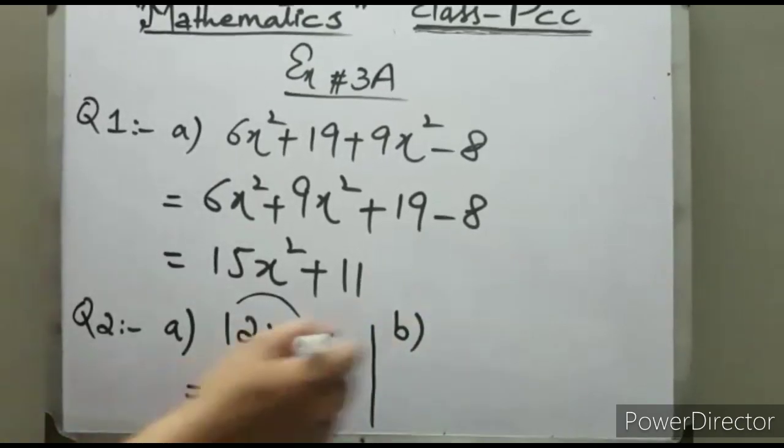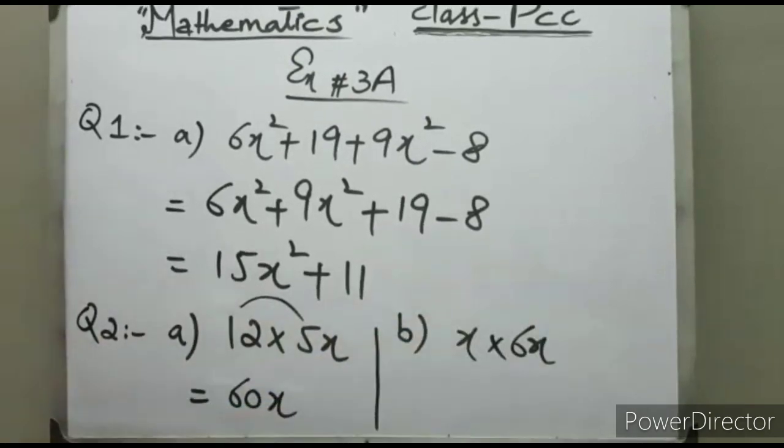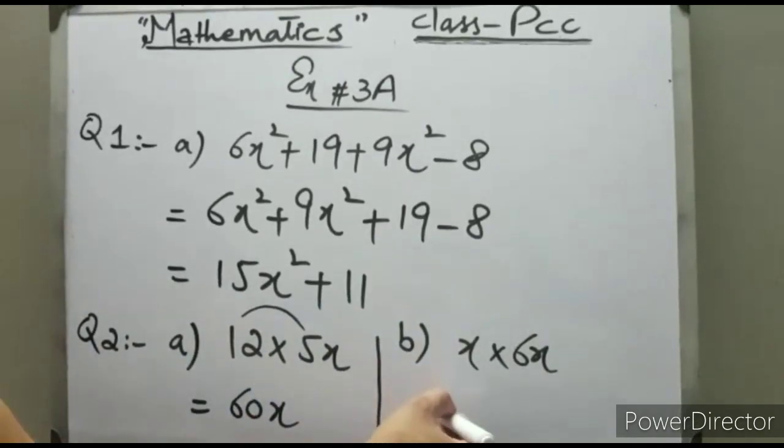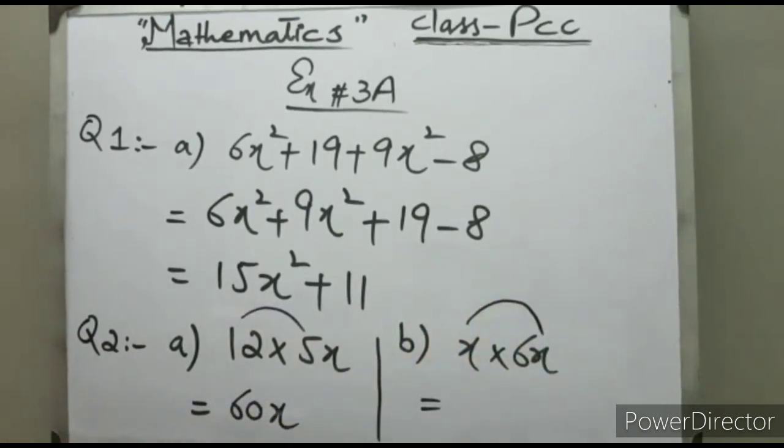Part B: x multiply by 6x. In this question, x will be multiplied by x. When variable multiplied by variable and the variables are same, then power will be added. So the simplest form is 6x².